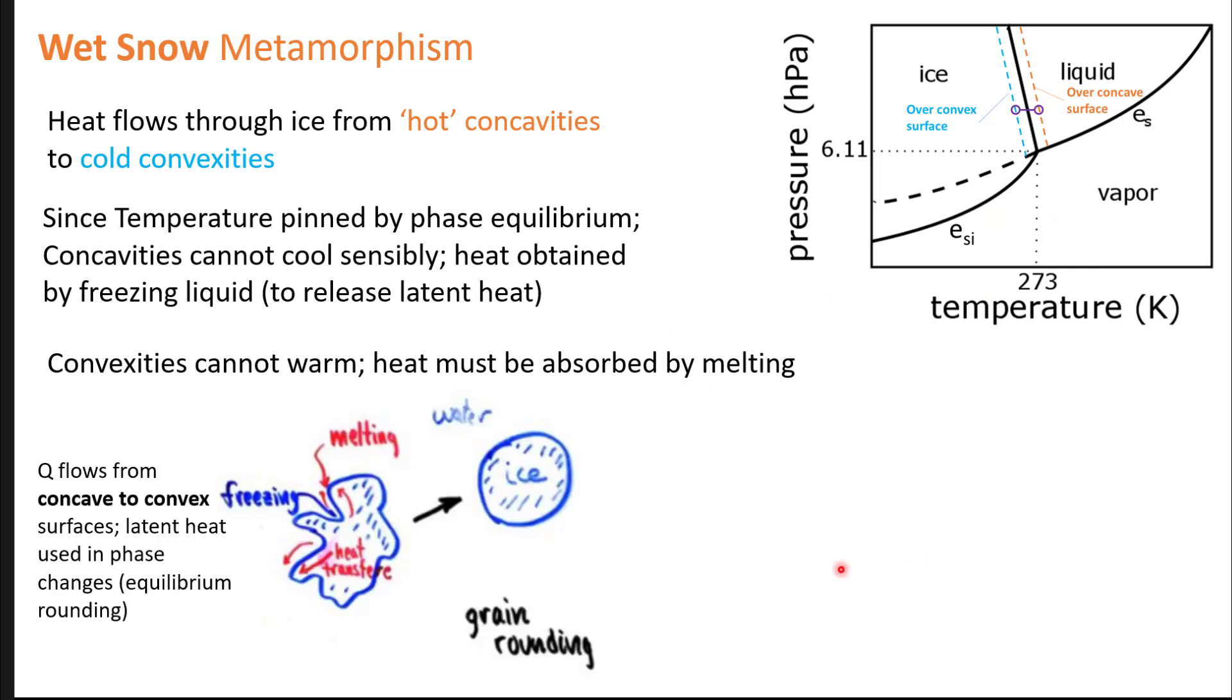A crude drawing here shows heat flowing from the concave parts of a high surface area crystal to the convex parts. From these low points to these high points, that's causing freezing and melting. The cumulative effect is you end up with rounded ice grains with liquid water at the interface.